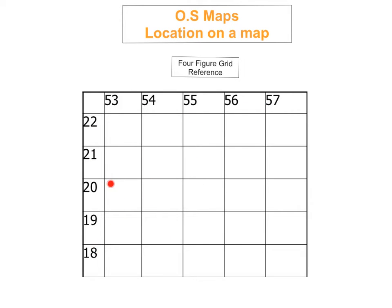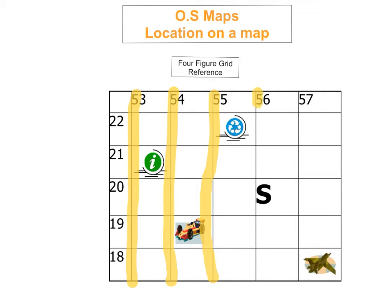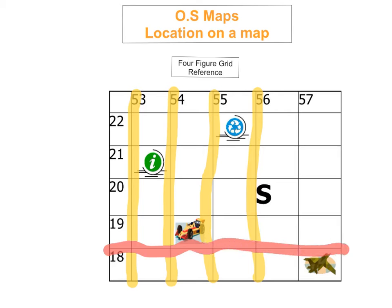You use these numbers to figure out your grid reference. The first thing you need to know is that the vertical lines on the Ordnance Survey Map — these lines here — are what we call our easting lines. And then you have your northing lines, which are the horizontal lines that go across — so these are your northing lines.